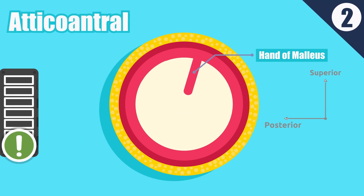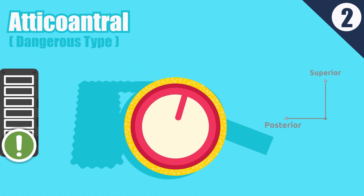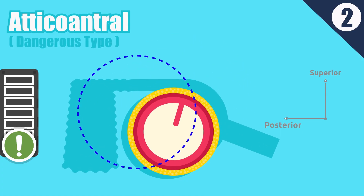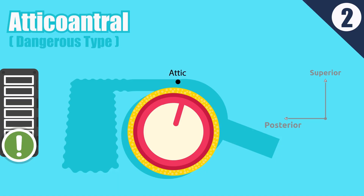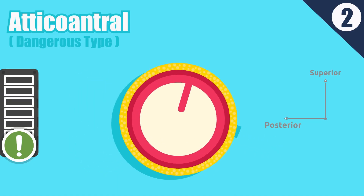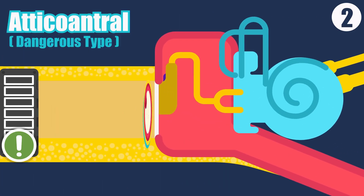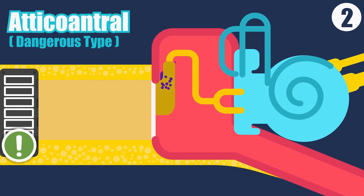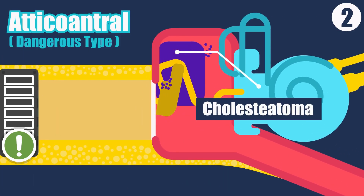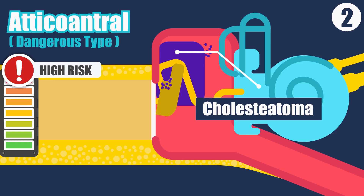Type 2: Atticoantral — also called the unsafe or dangerous type. It involves the postero-superior part of the cleft — in other words, the attic, antrum and mastoid — and is associated with an attic or marginal perforation. The disease is often associated with a bone-eroding process such as cholesteatoma. Risk of complications is high in this type.